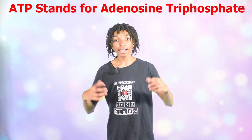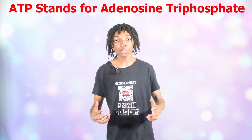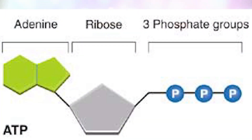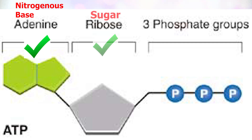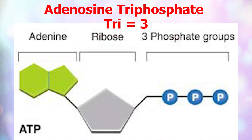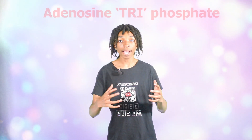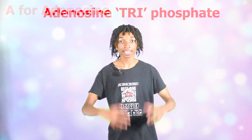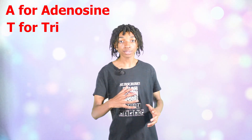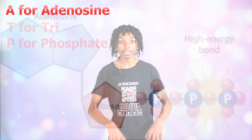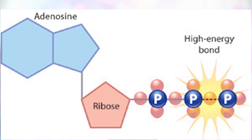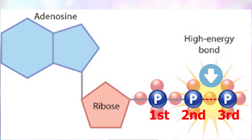ATP, which stands for adenosine triphosphate, is a nucleotide, which is chemically made up of a nitrogenous base, a sugar molecule, and a phosphate group. Let's go back to the name adenosine triphosphate. Tri stands for the number three, so that lets us know that ATP contains three phosphate groups on its tail. That's why we call it adenosine triphosphate — A for adenosine, T for tri, and P for phosphate. The energy in adenosine triphosphate is stored between its second and third phosphate groups.